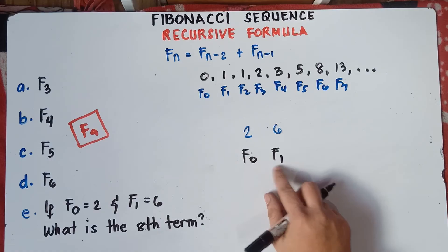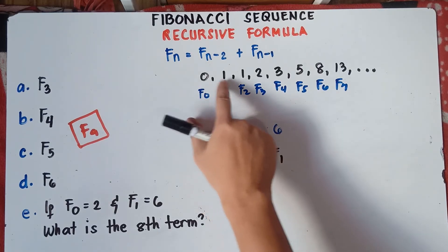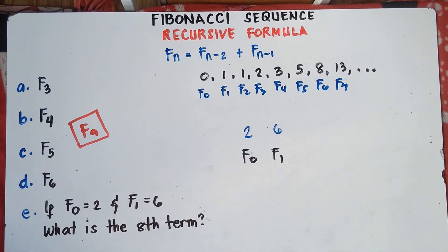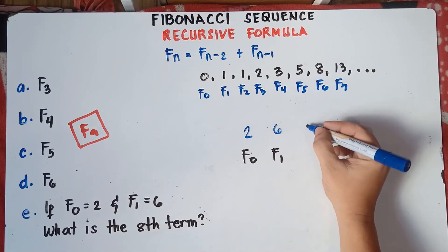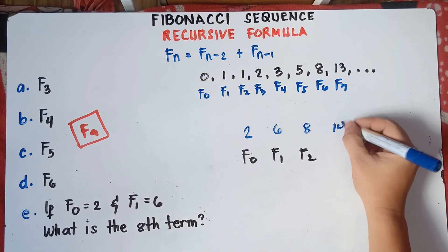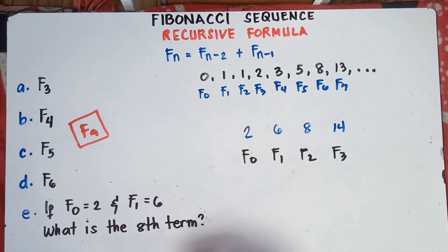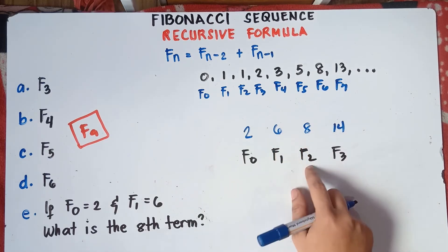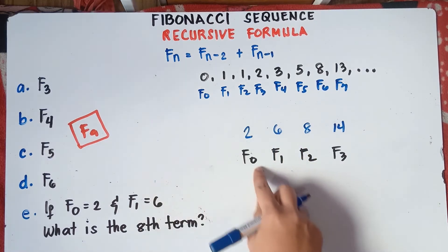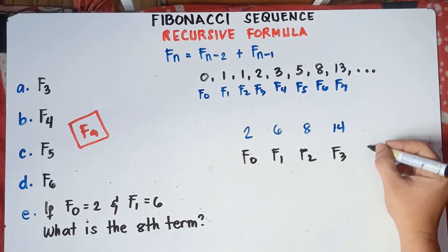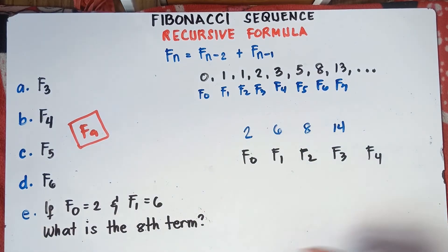To get F sub 2, just add the preceding terms — same as the Fibonacci pattern. So 2 plus 6 equals 8; F sub 2 is 8. Then 6 plus 8 equals 14; F sub 3 is 14. Since we're looking for the 8th term, we continue: 2 is the first term, 6 is the second, 8 is the third, 14 is the fourth. To get the 5th term, F sub 4: 8 plus 14 equals 22.